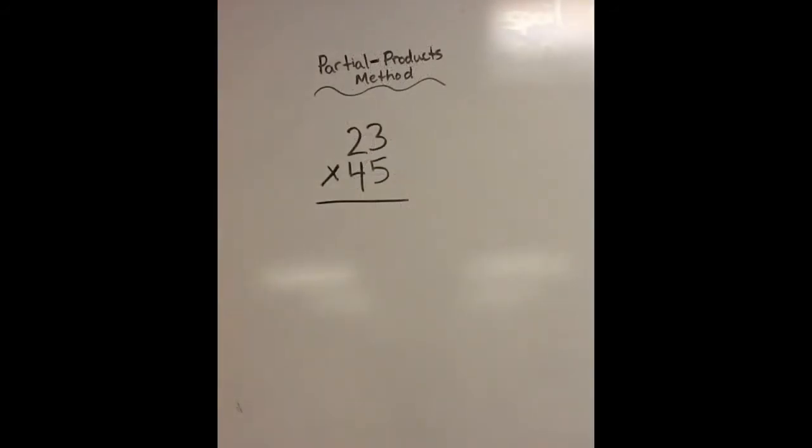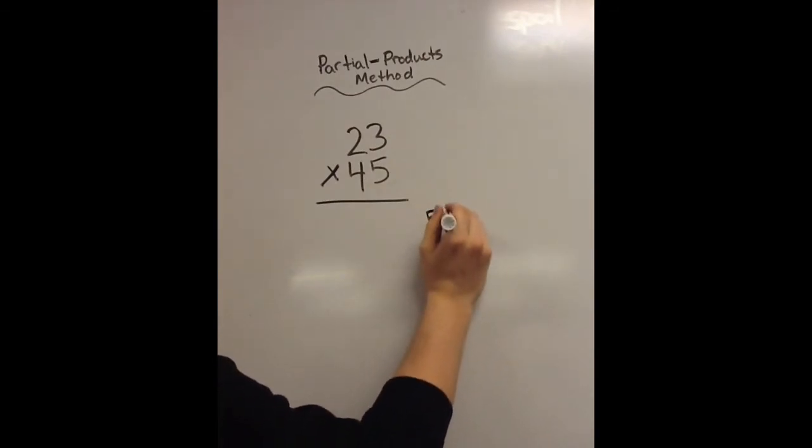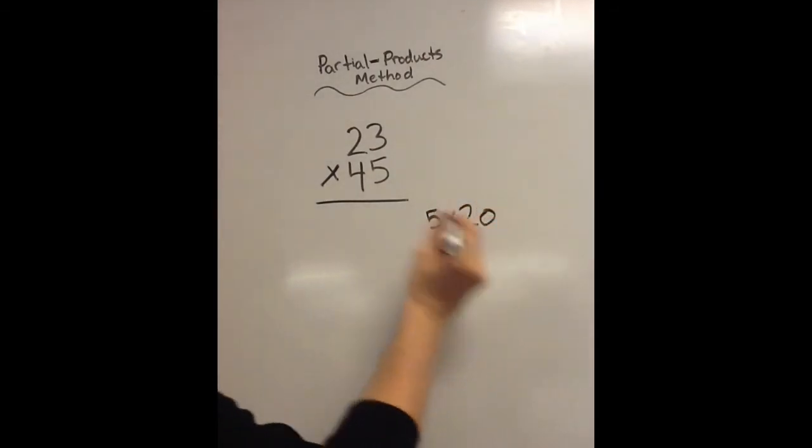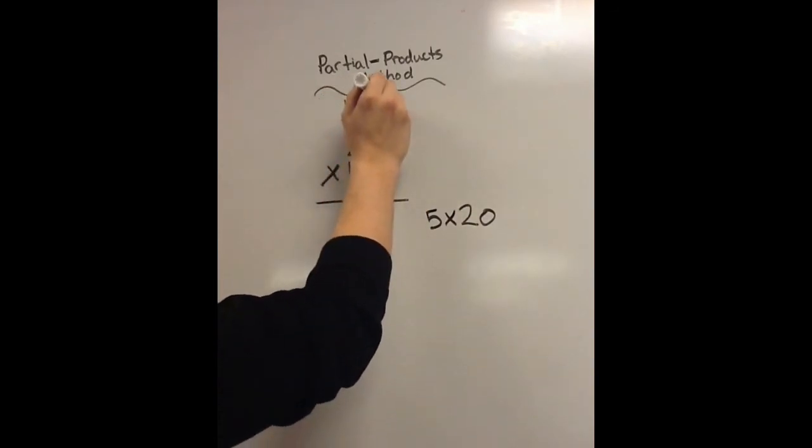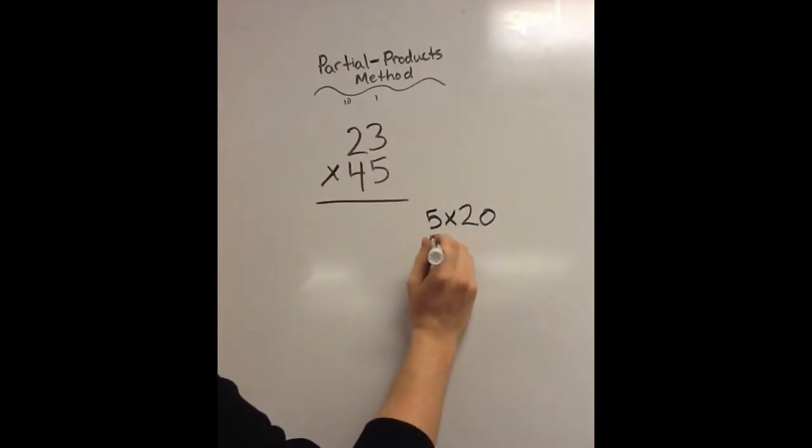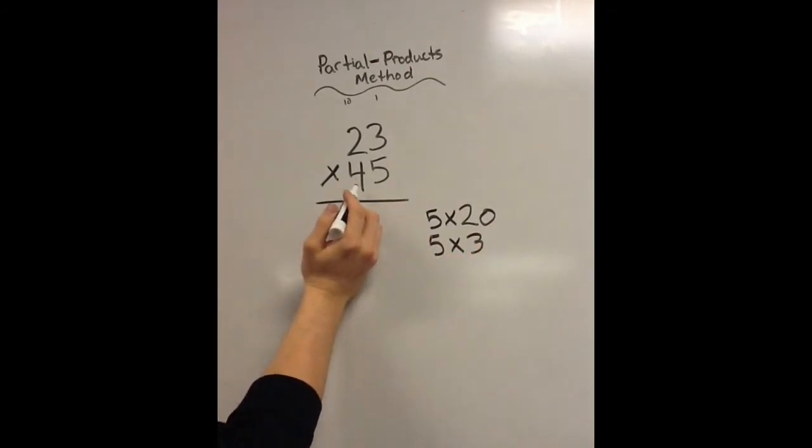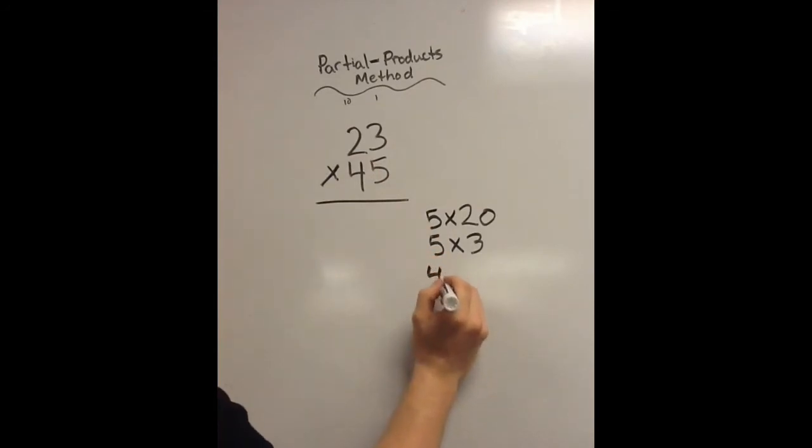Now, for our partial products, it's similar, but it's different in that it's going to start from the left and work its way right. So, what I prefer to do is I prefer to list out my problems again until I get the hang of it. And I know that this is actually 5 times 20. And the reason that it's 20 again, because this is the 10's place, and this is the 1's place. Then we have 5 times 3. Next, we have 4, but it's not really 4, it's 40. We'll do 40 times 20. And we have 40 times 3.